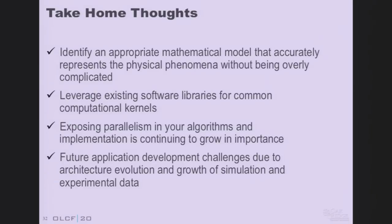The take-home thoughts are: think about the life cycle of computational science. One — identify appropriate mathematical models, don't oversimplify and don't overcomplicate. Two — probably the most important one I wish I had known: leverage existing software libraries for these common computational kernels. Use those computational kernels as a way to talk between domains — in many cases one domain has solved a problem that another domain doesn't even know about, and these motifs can be ways to learn from other domains. Three — exposing parallelism and keeping up with current programming models will be very important now and in the future.